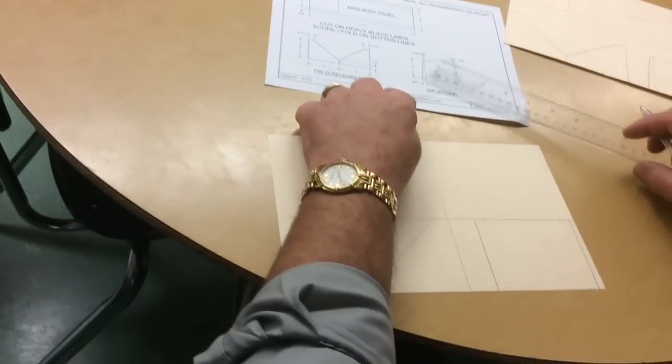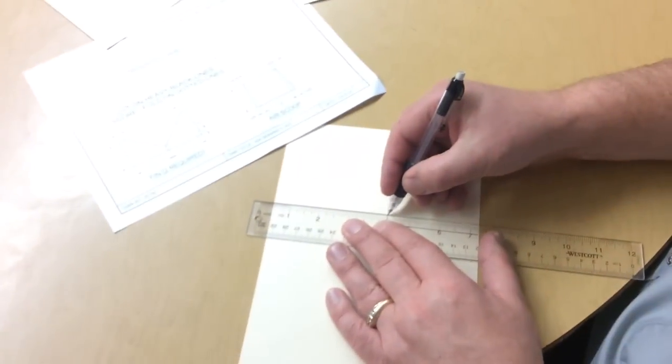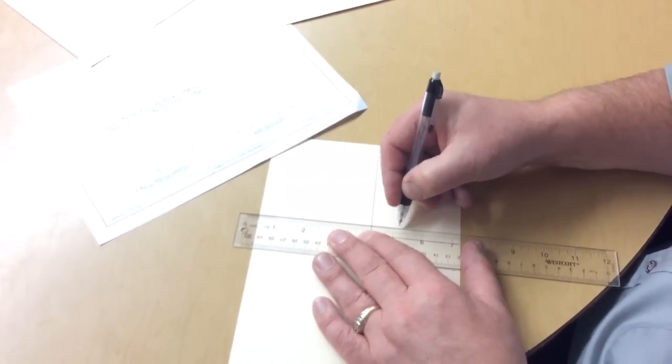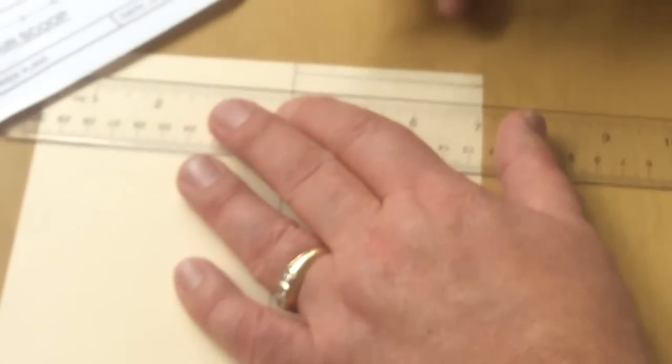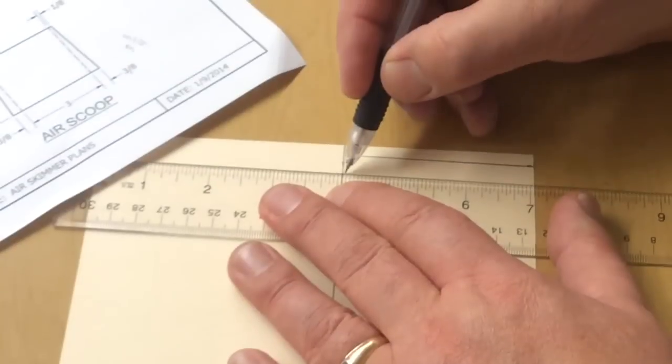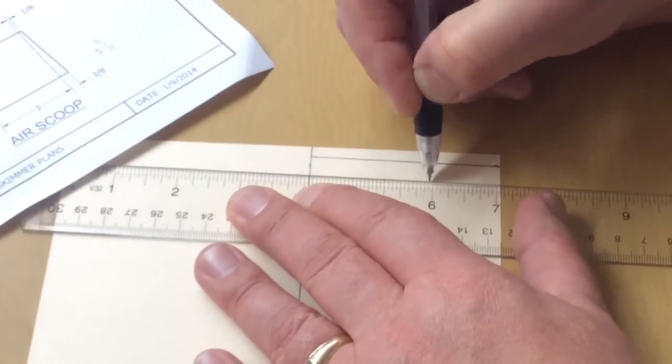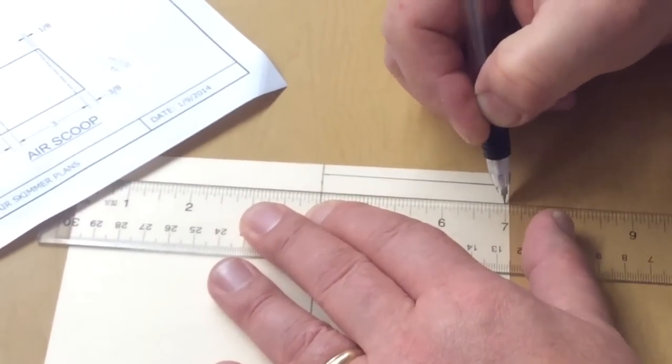Now those are my hidden lines, so I'm going to go ahead and draw those in as hidden lines. Sorry, dashed lines, same thing as a hidden line when we talk about dimension and drawing later. And I'm going to draw another vertical dashed line over here because these are my fold lines of my air scoop.